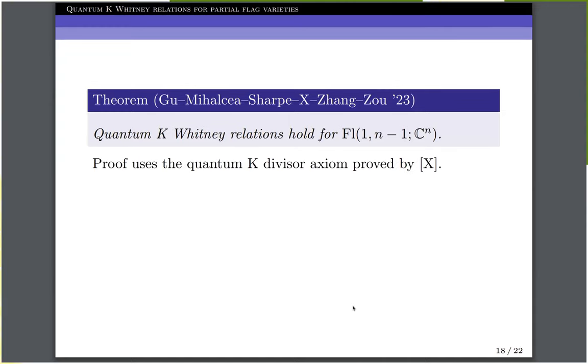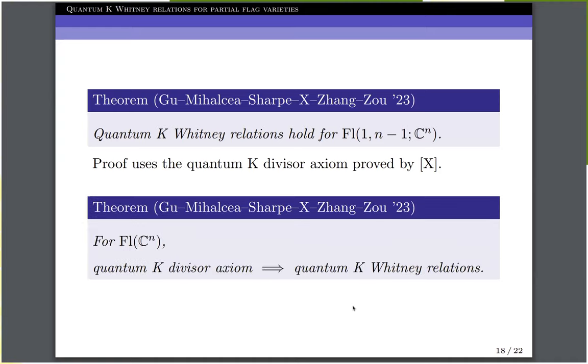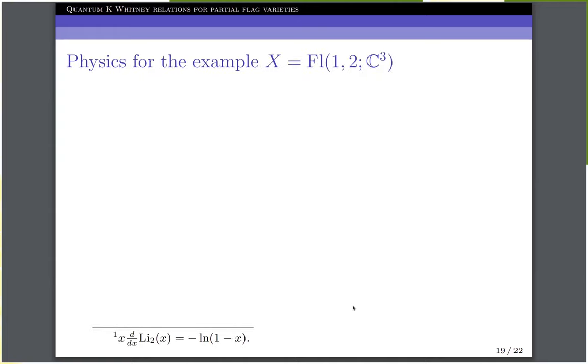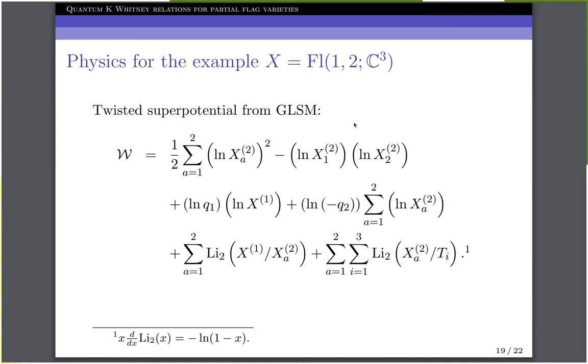We also prove our conjecture for incidence varieties. This uses the quantum K divisor axiom that I proved earlier. For the complete flag variety, we also prove that our conjectured quantum K-Whitney relations follow from the quantum K divisor axiom. Finally, I'd like to say a few words about the physics computation that inspired our conjecture. This is in the case of FL3. So our physics collaborators handed us with this twisted...